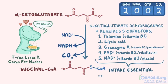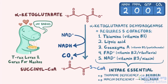For example, thiamine deficiency can lead to a disease called beriberi, in which the central nervous system and then the heart can't work properly. Likewise, niacin deficiency can cause a disease called pellagra, characterized by the four D's: diarrhea, dermatitis, dementia, and — if the deficiency isn't corrected — death.